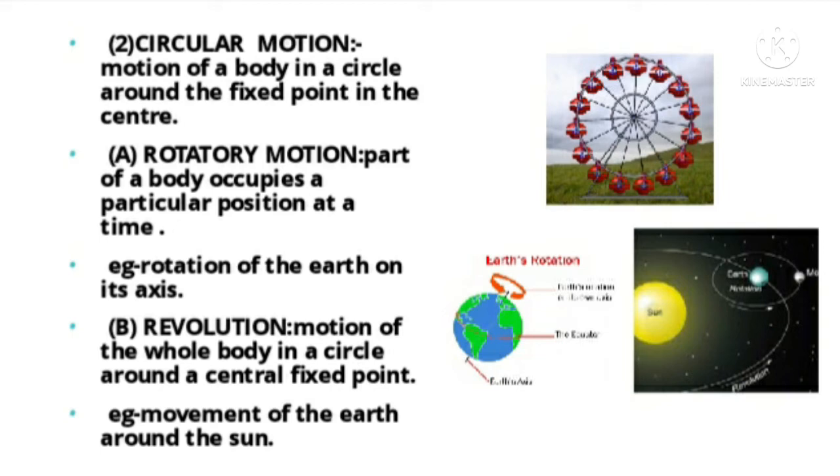Revolution is the motion of the whole body. The whole body rotates in a circle fully. For example, the movement of earth around the sun. The sun is fixed and the earth revolves around it. This is revolution.